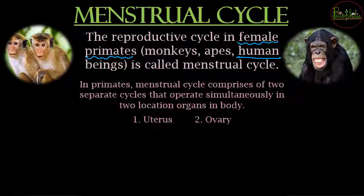During the menstrual cycle in primates, there are two separate cycles that occur simultaneously, involving two locations. First, the uterus is involved — changes occur in the endometrial lining. Second, the ovary is involved because degradation of the corpus luteum and release of the female gamete takes place there.